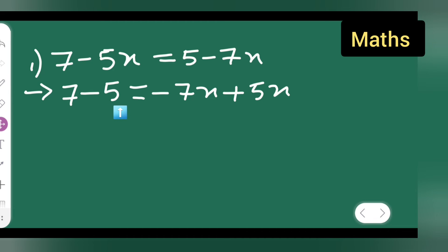7 minus 5 will be 2. On the other side, minus 7x plus 5x will be minus 2x. So it will be: 2 is equal to minus 2x.